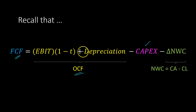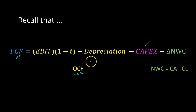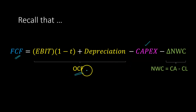In a previous video, I explained how operating cash flow is typically calculated as earnings before interest and taxes multiplied by one minus the tax rate, plus depreciation. While this is the standard way in which operating cash flow is calculated, there are other ways in which you can measure operating cash flow. This video is going to walk you through some of those equations.